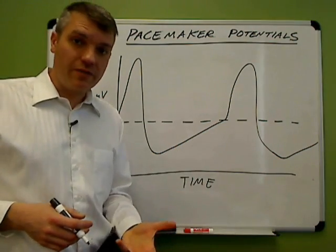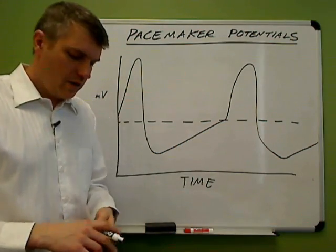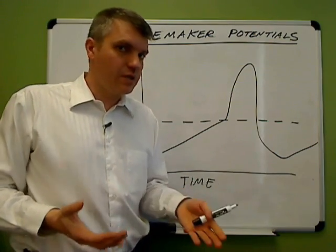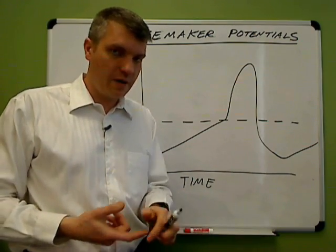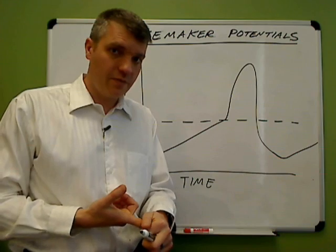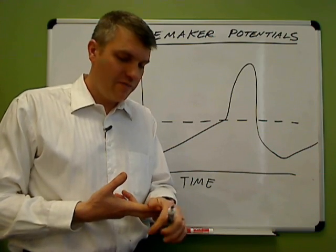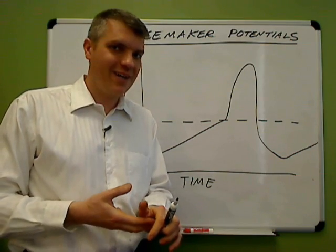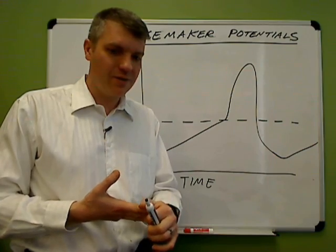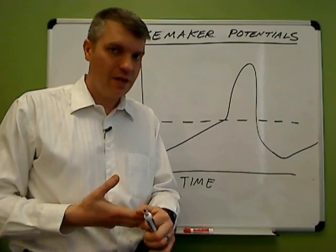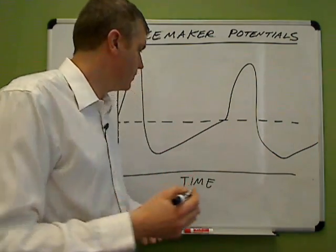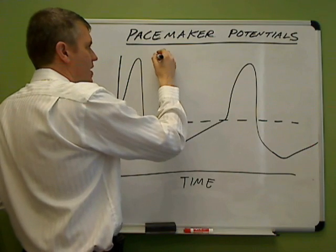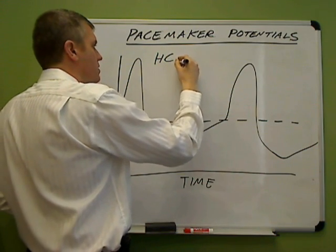Here's the reason for that. Just like with skeletal muscle cells, just like with other cardiac myocytes, the pacemaker cells have voltage-gated sodium channels, they have voltage-gated potassium channels, and of course don't forget voltage-gated calcium channels. But in addition to that, pacemaker cells have HCN channels.